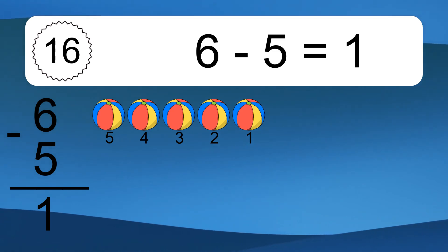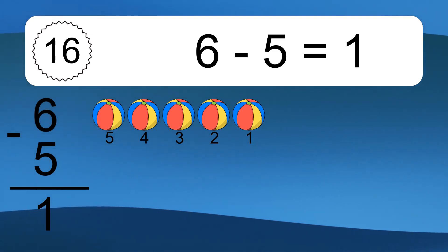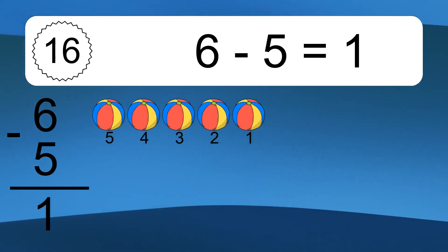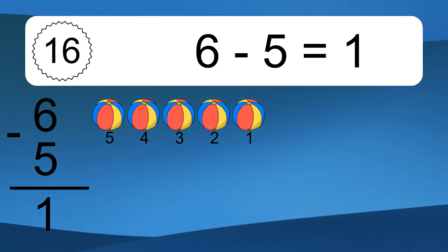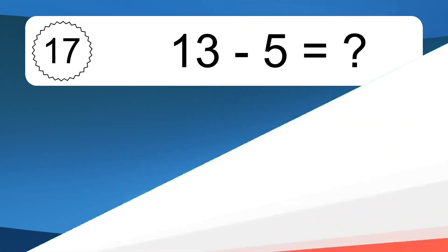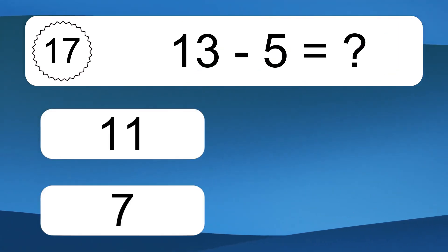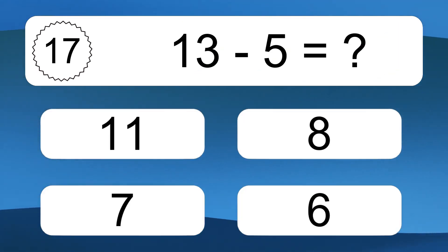6 minus 5 equals what? 6 minus 5 equals 1. Let's count it. 5, 4, 3, 2, 1.